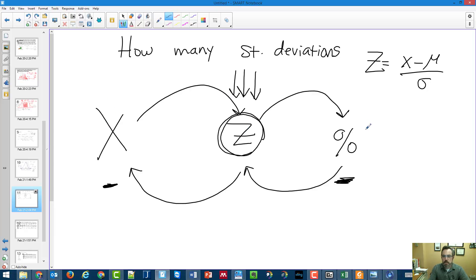Or you're going to start with a percent, go to z, go to a score. Sometimes you stop in the middle if they ask how many standard deviations, but that's very relatively uncommon. Hopefully that will help clear up the z-scores one last time.